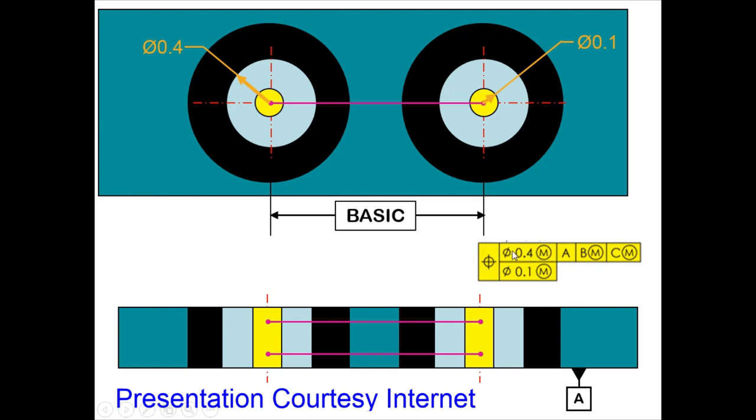The first level is for controlling the location of the pattern, and the second level - it can have more than two levels also - in this case the second level is for feature relating tolerances.